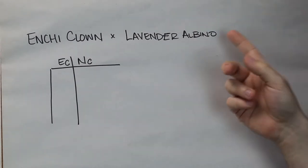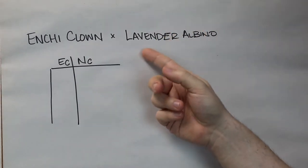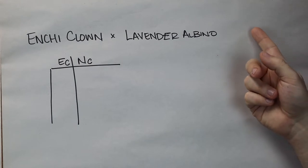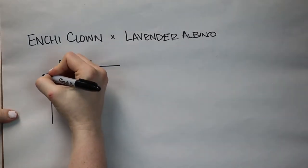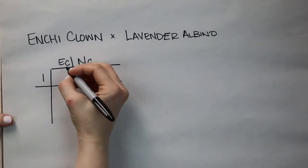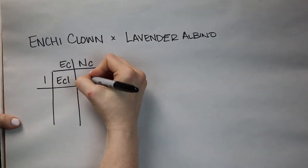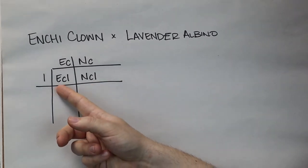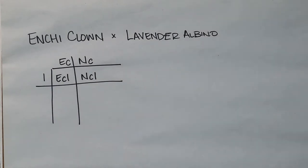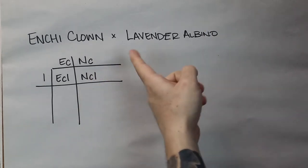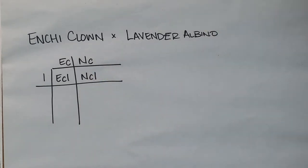For our lavender albino, it's the same — it's a visual recessive. If we breed this visual recessive to a normal, we only have one option and that's to get het. So we'll put a little 'L' for lavender. Then put in the lines and fill in everything. You only have two options out of this pairing: you either get enchis that are double het for clown and lavender albino, or you get normals that are double het for clown and lavender albino. Real simple — only two options. Let's move on to some more complicated ones.